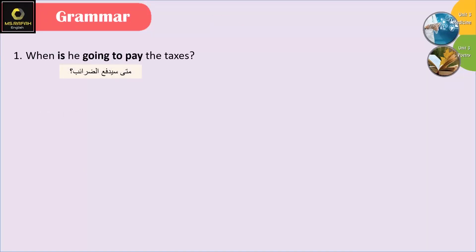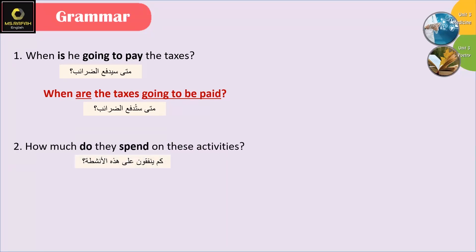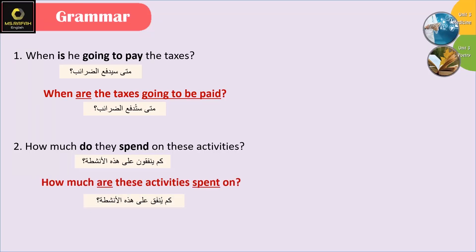'When is he going to pay the taxes?' becomes 'When are the taxes going to be paid?' 'How much do they spend on these activities?' becomes 'How much are these activities spent on?'